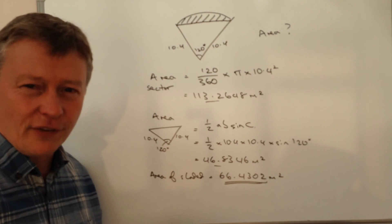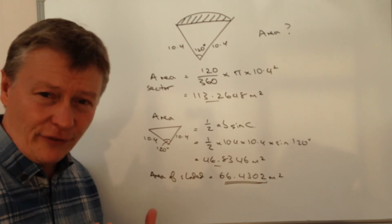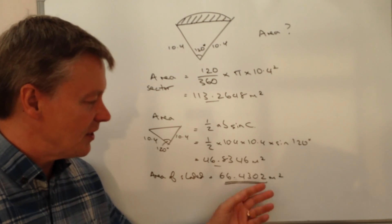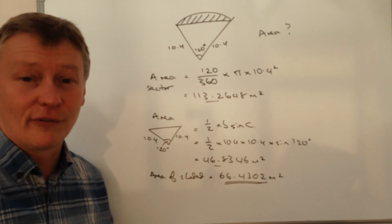Sometimes they do ask you to put it to three significant figures or a couple of decimal places, but to three significant figures, it would be 66.4 or to two decimal places, it'd be 66.43.